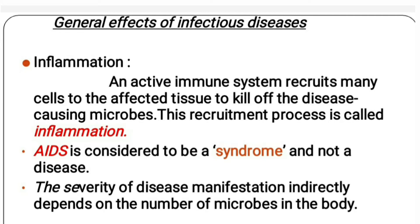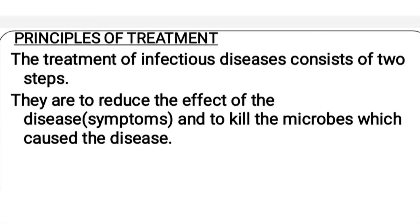General effects of infectious diseases: an active immune system recruits many cells to the affected tissue to kill off the disease-causing microbes. This recruitment process is called inflammation.